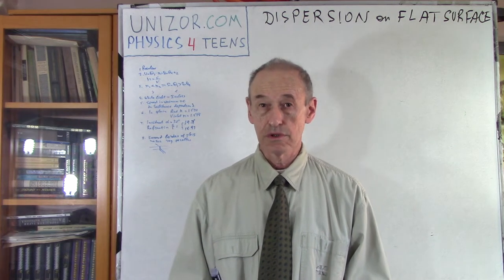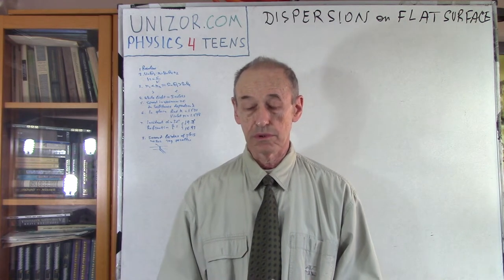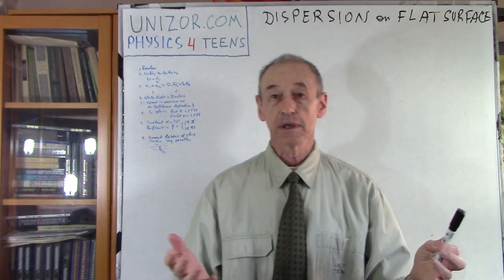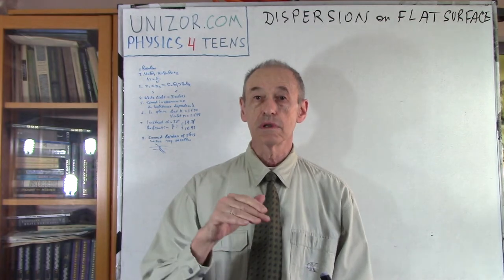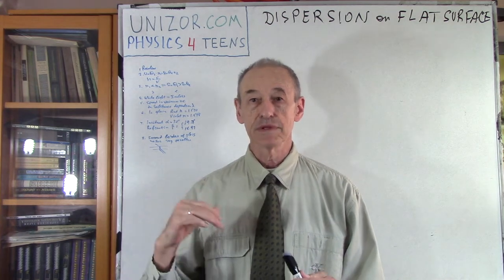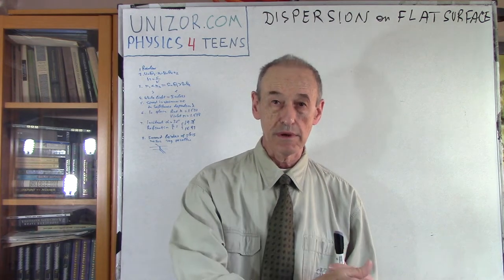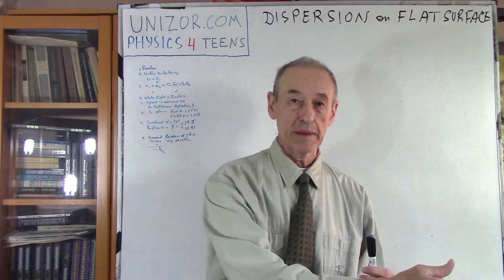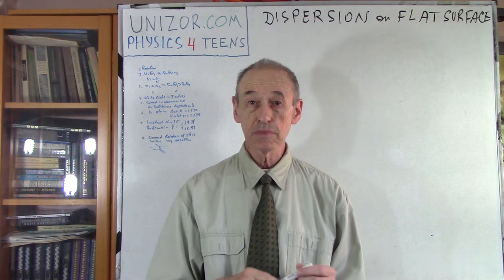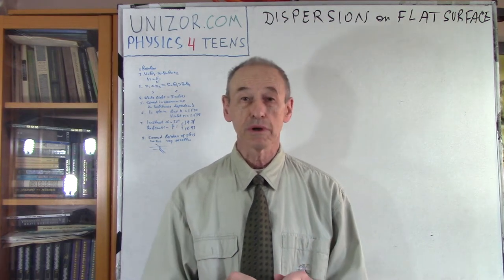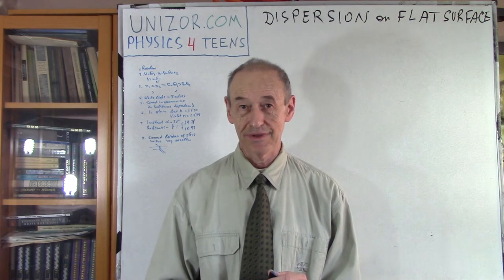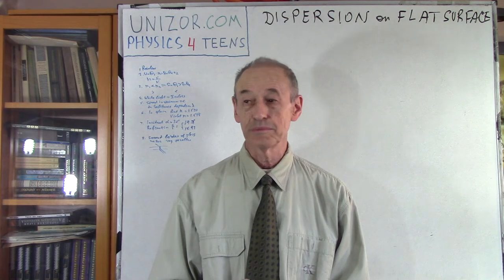Dispersion is a rather large topic, which I have decided to break into parts. Today we will talk about dispersion on a flat surface — it can be glass, like a window glass. The light goes into the flat surface, there is dispersion, and in the second half of this lecture I will talk about what happens when it goes through another flat surface — into the glass and then from the glass back into the air.